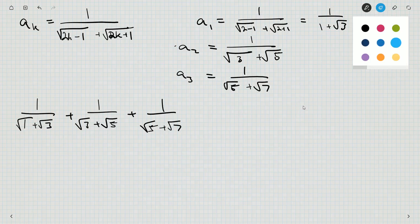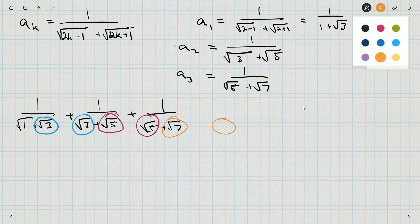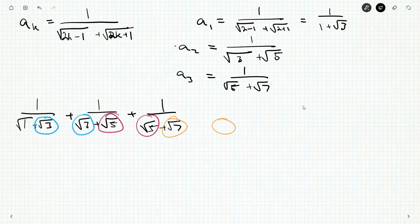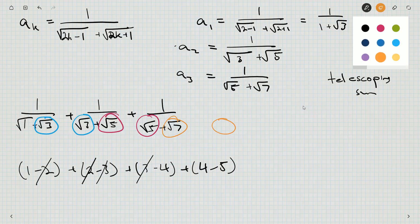Now what this sort of sum reminds me of, because you notice we got a root 3 here and a root 3 here, and we have a root 5 here and a root 5 here, and then we'd have a root 7 here and a root 7 in the next one. So this reminds me of something called a telescoping sum. And it's basically something like this. You do sort of 1 minus 2, plus 2 minus 3, plus 3 minus 4, plus 4 minus 5. So this is a telescoping sum because the minus 2 here and the plus 2 here cancel.